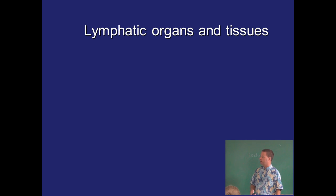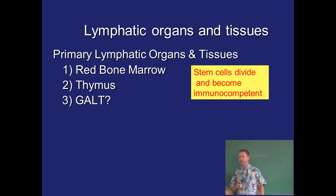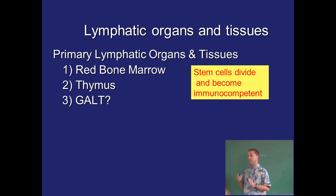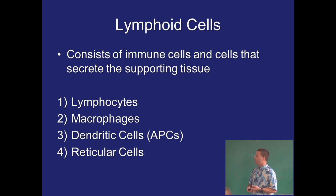Primary lymphatic organs — the red bone marrow, the thymus, and also gut-associated lymphatic tissue (GALT) — are where immunocompetence occurs; it's the school for our B and T cells. Secondary lymphatic organs are our battlegrounds: the lymph nodes, the spleen, and GALT.